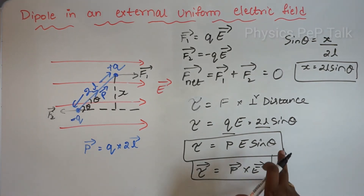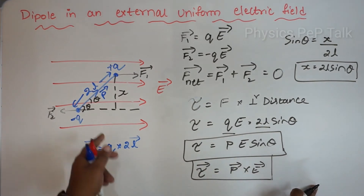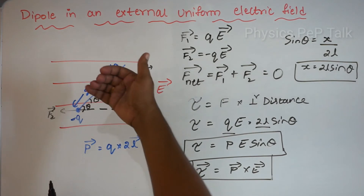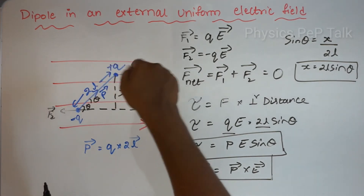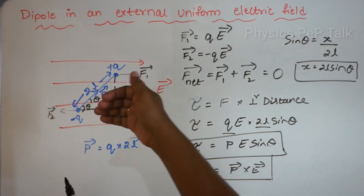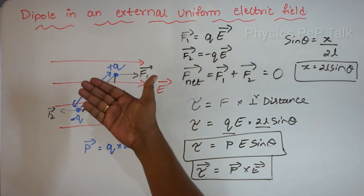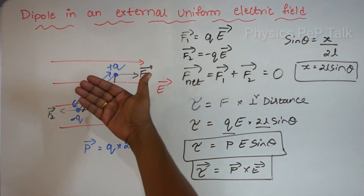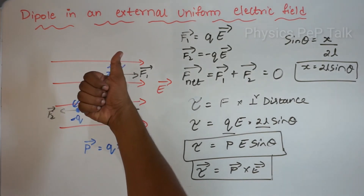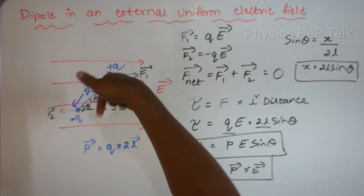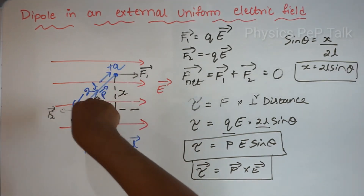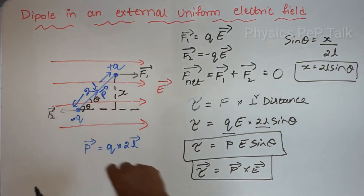The direction of this torque can be determined using the right-hand screw rule or cork screw rule. According to that, the direction of the torque will be inwards, going inside the plane of the board.